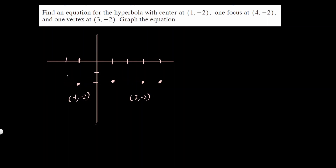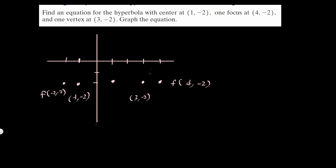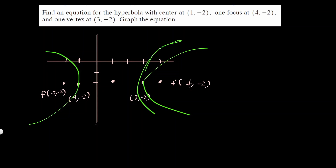There's another focus symmetric to the first one. From the center, the first focus is 3 units right at (4, negative 2), so the other focus is 3 units left at (negative 2, negative 2). The focus is inside the hyperbola. We don't actually know how wide it will open — whether it's skinny or wide — so let's come up with the equation first.